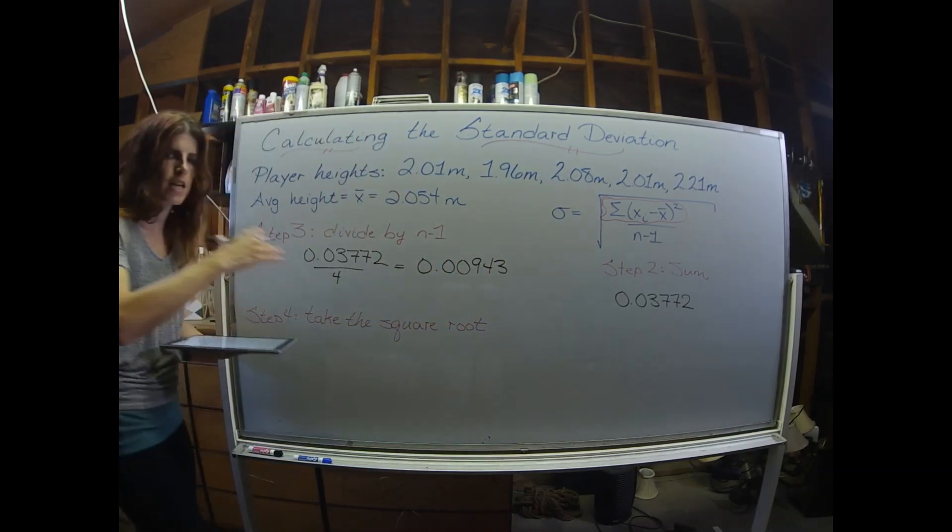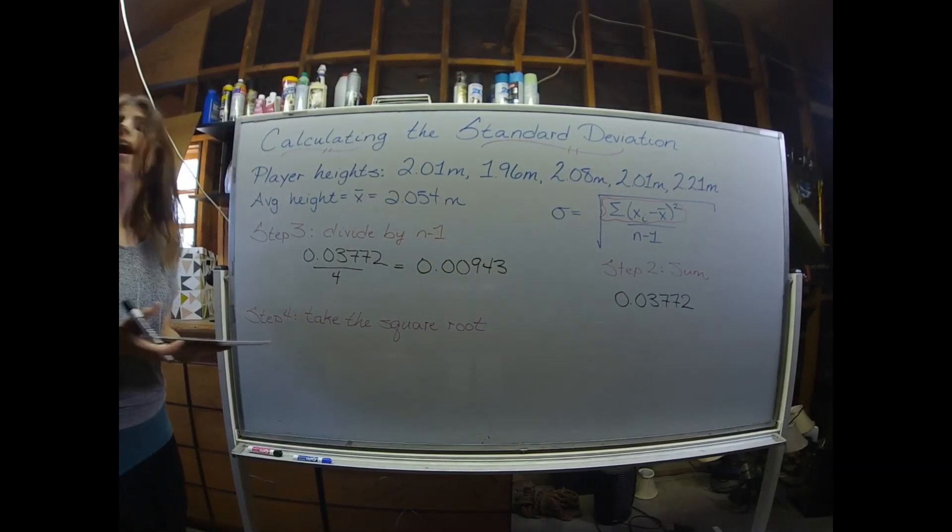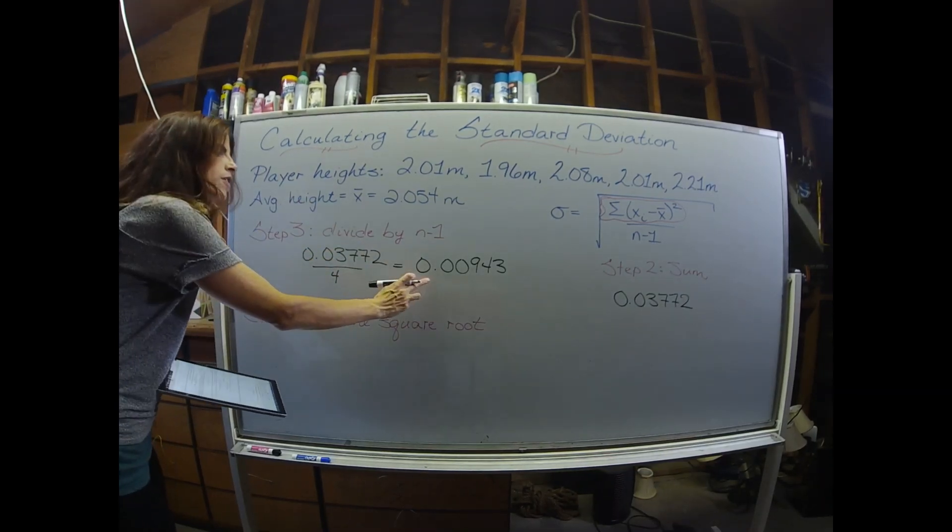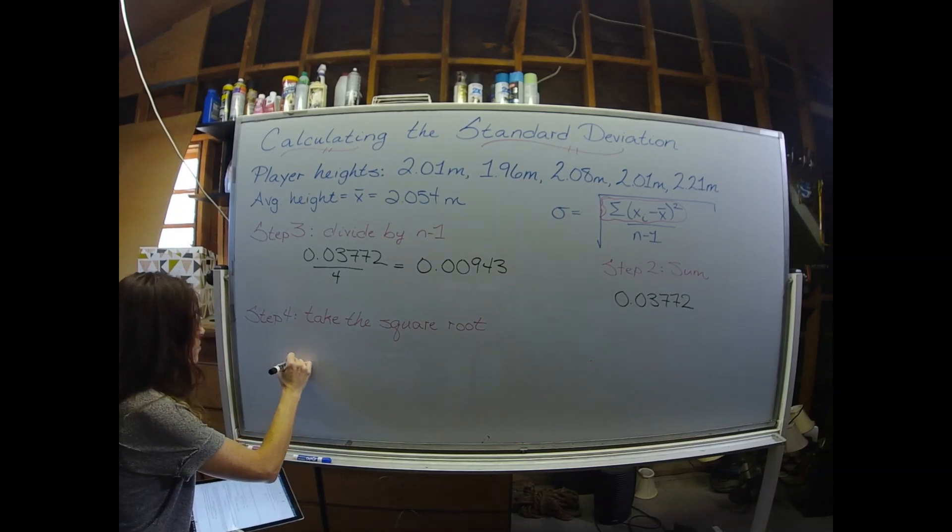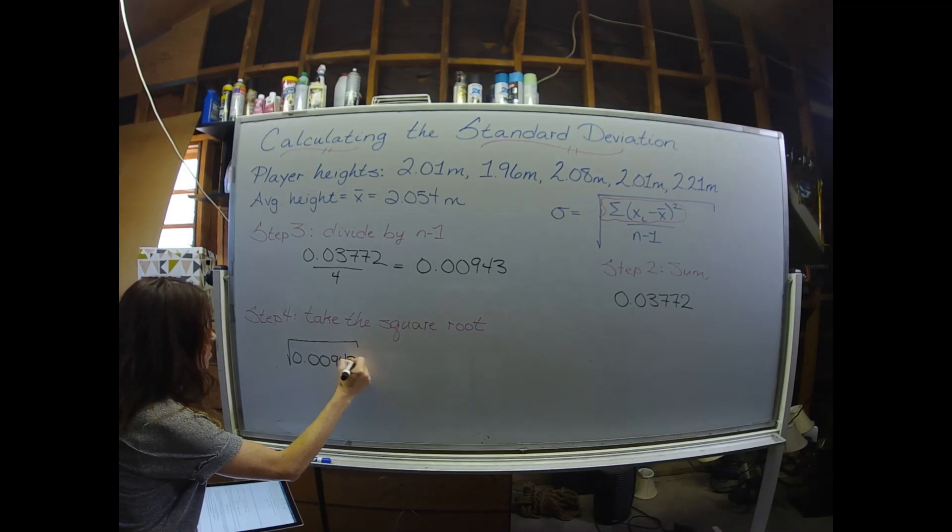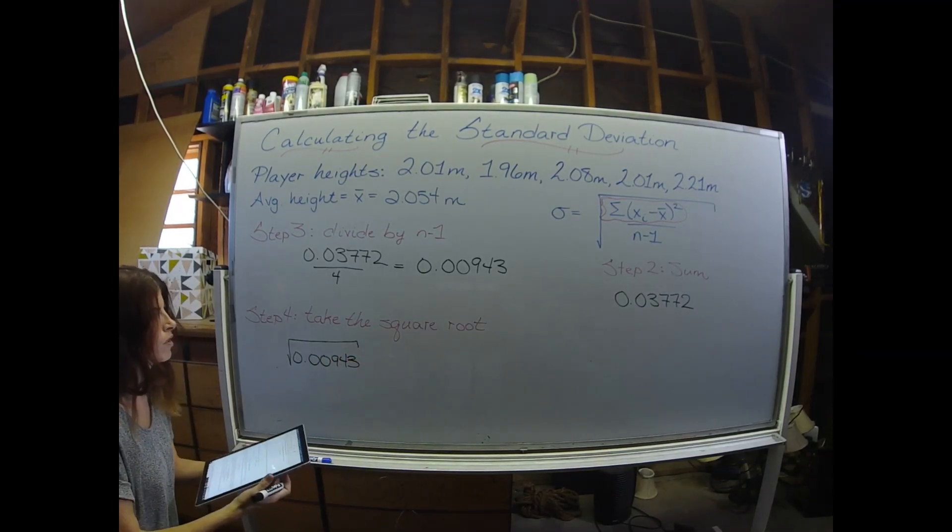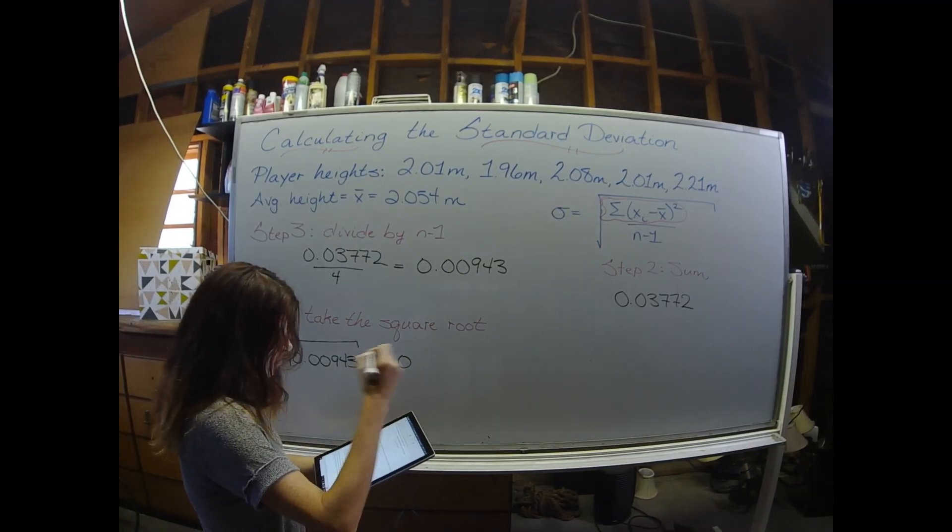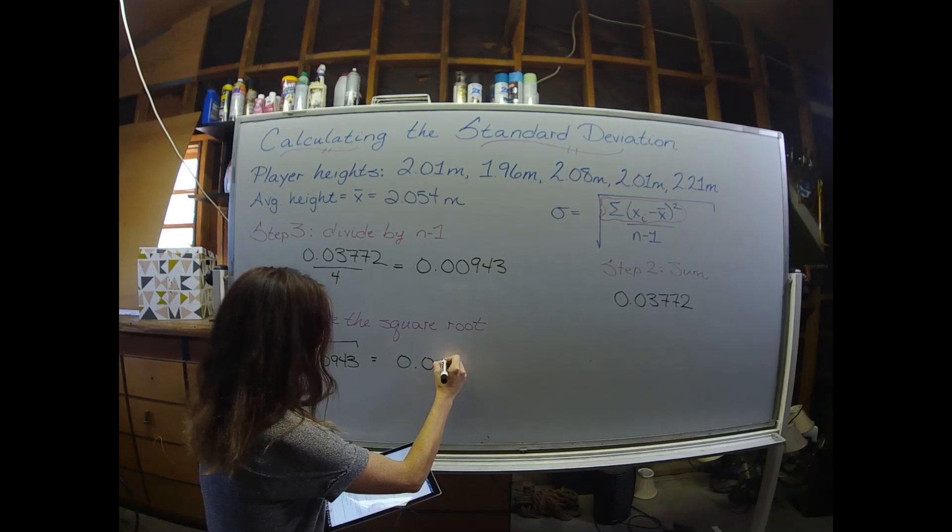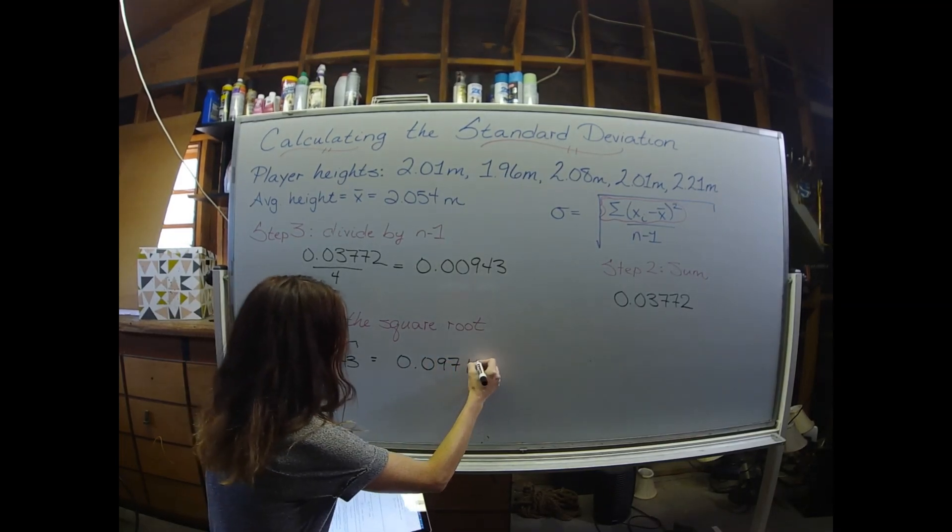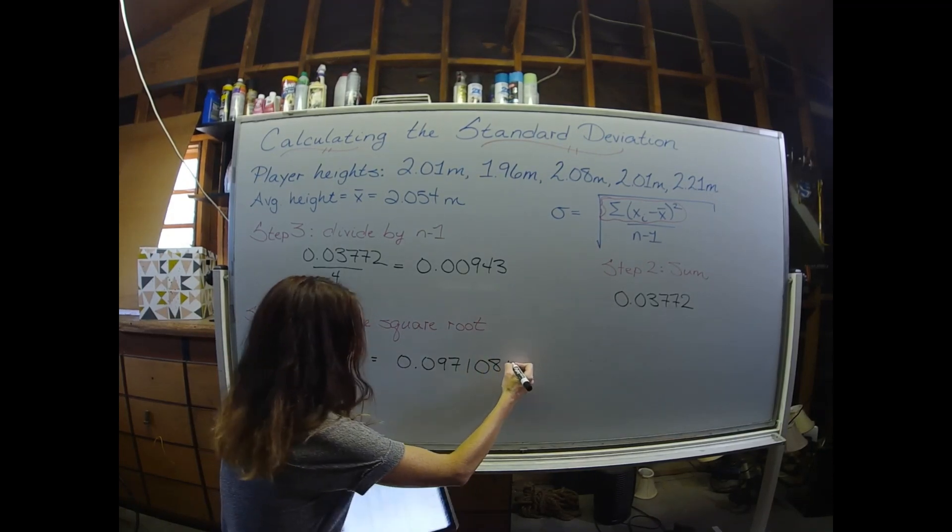I'm not rounding anything till we get to the very end. The last step is to take the square root of this value right here. And that gives me a super long number. I'm going to have to cut it off eventually because it just seems to go on forever. But 0.097108187.